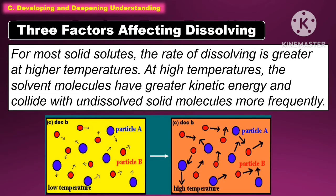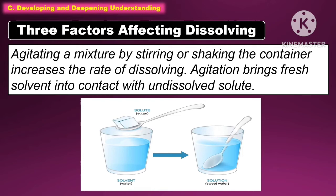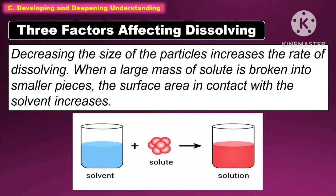For most solid solutes, the rate of dissolving is greater at higher temperatures. At high temperatures, the solvent molecules have greater kinetic energy and collide with undissolved solid molecules more frequently. Agitating a mixture by stirring or shaking the container increases the rate of dissolving. Agitation brings fresh solvent into contact with undissolved solute. Decreasing the size of the particles increases the rate of dissolving. When a large mass of solute is broken into smaller pieces, the surface area in contact with the solvent increases.